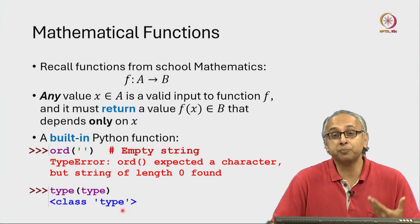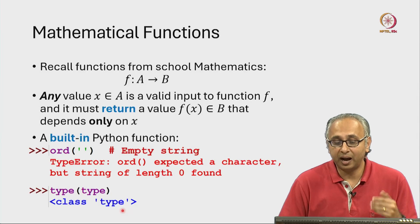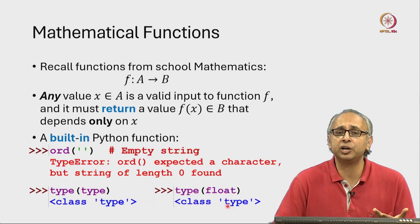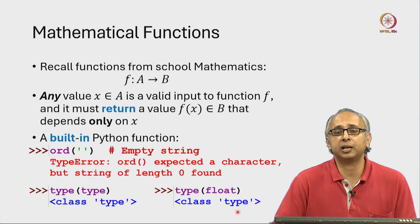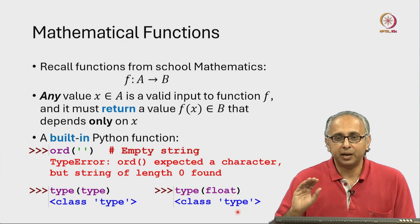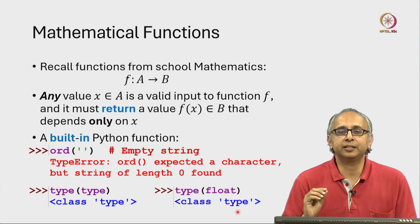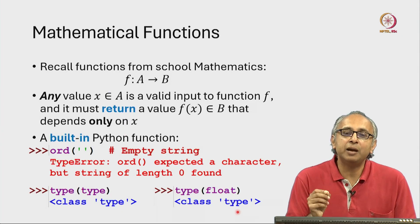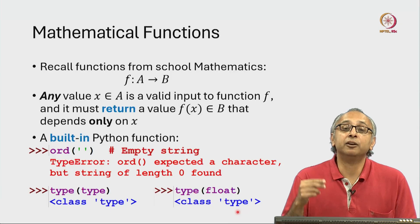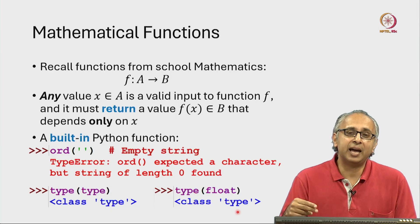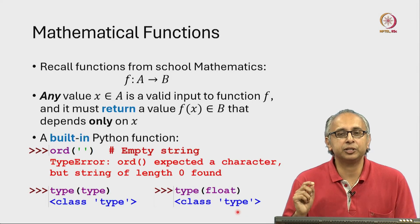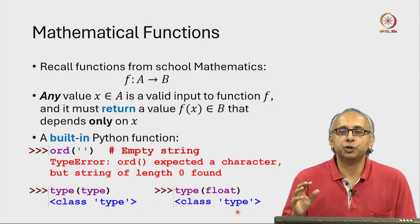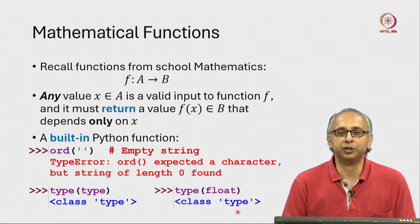And indeed other things that we have seen, for example float and int and str, are also objects of this special class type. Now despite this technical fact, I in this course will slightly abuse this notation. I will refer to type and float and int as functions although technically they are not actually functions. This simplification is okay for us to make in this introductory course.